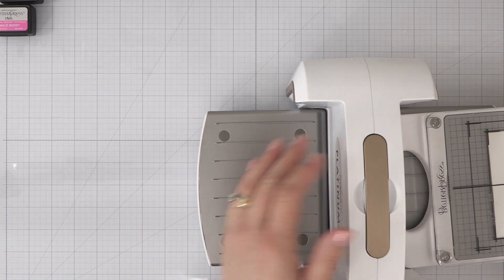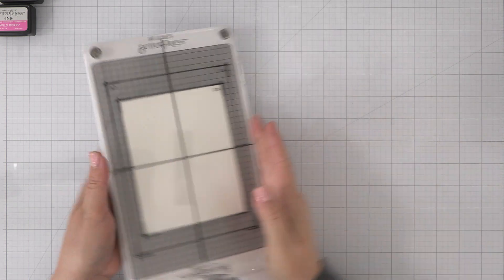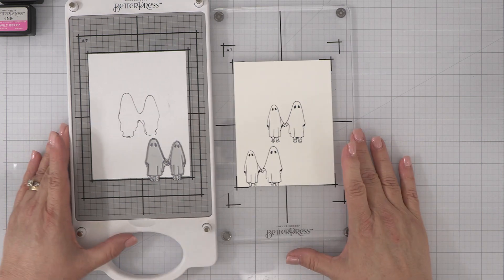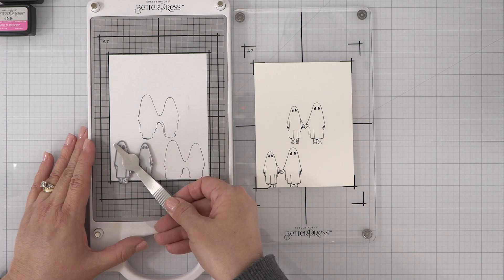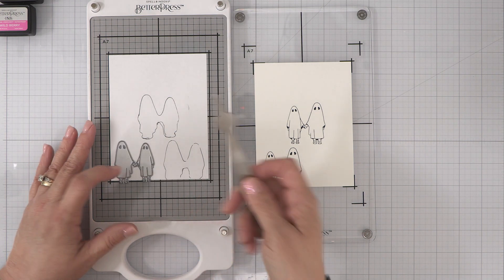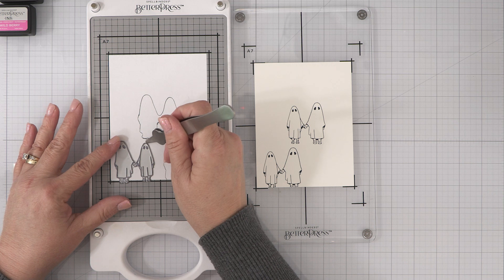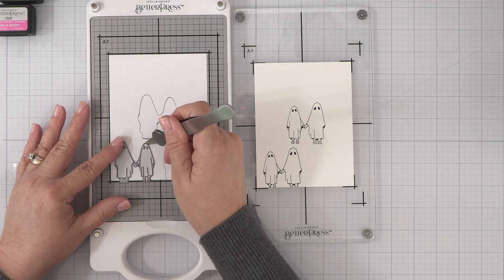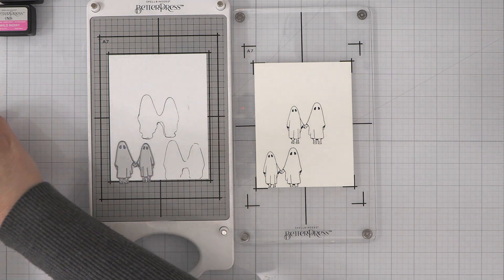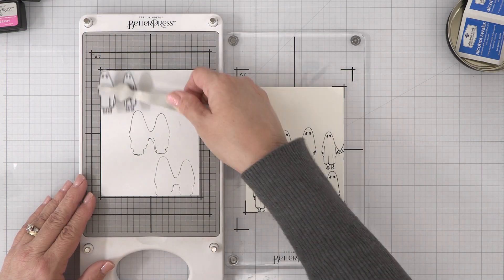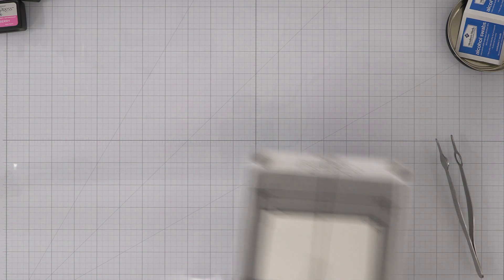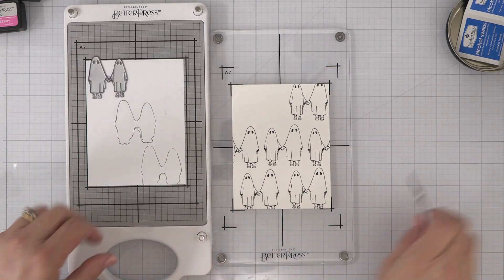So now I'm going to go ahead and remove the platen and you can see where we're starting to create our pattern across our paper. Now the tweezers that I'm using are from the very first Glimmer machine I ever had. They work perfect for picking these little plates up off of this magnetic chase and moving them around easily. I don't have to get my fingers quite so inky. So let's go ahead and run this through again and then we're going to finish it off.